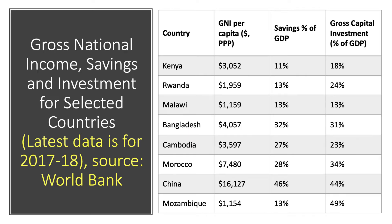Let's look at some data on gross national income per capita, savings and investment for selected countries. The data is for 2017-18 and the source is the World Bank. Take countries such as Kenya, Rwanda and Malawi — in those countries, gross national savings are barely above 10% of national income and they fall well below the scale of capital investment needed to drive long-term growth.